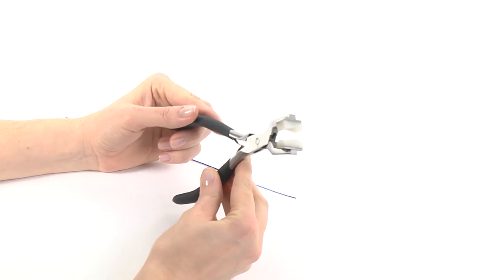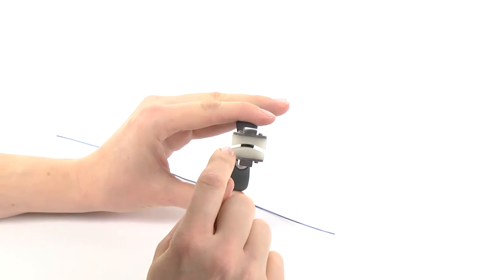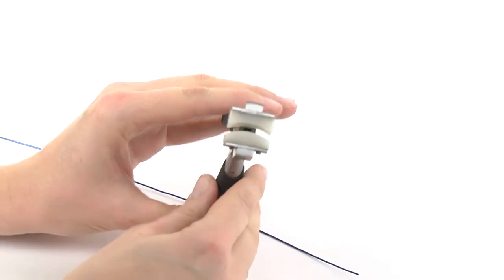These are the wire forming pliers. As you can see, they have a nylon jaw and they're perfect for shaping bracelet blanks and for curving wire.